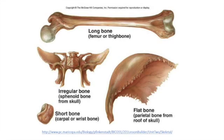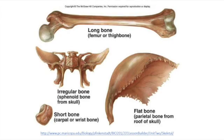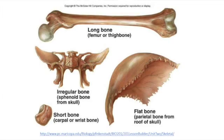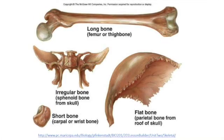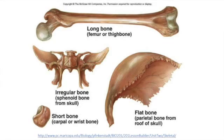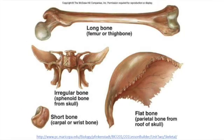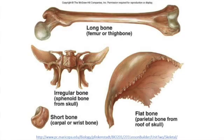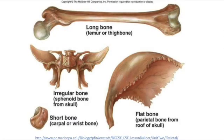Then you have short bones, which are defined as being approximately as wide as they are long. These would be bones like your carpals or tarsals, the bones of the hand. The third type is irregular bones — these are bones that don't really fall into any other category because they have an odd shape. Things like your vertebrae would be an irregular bone.